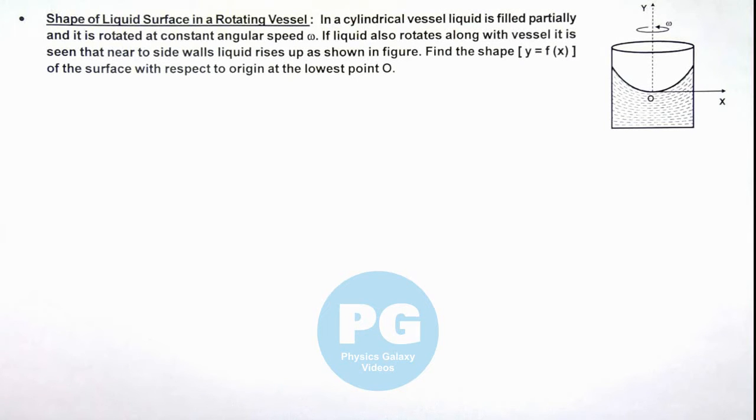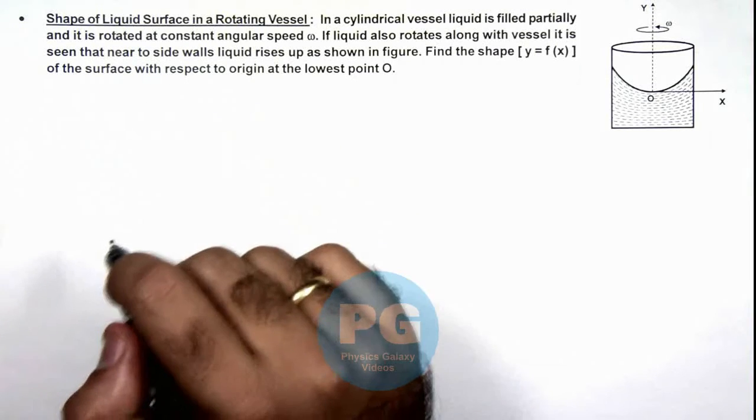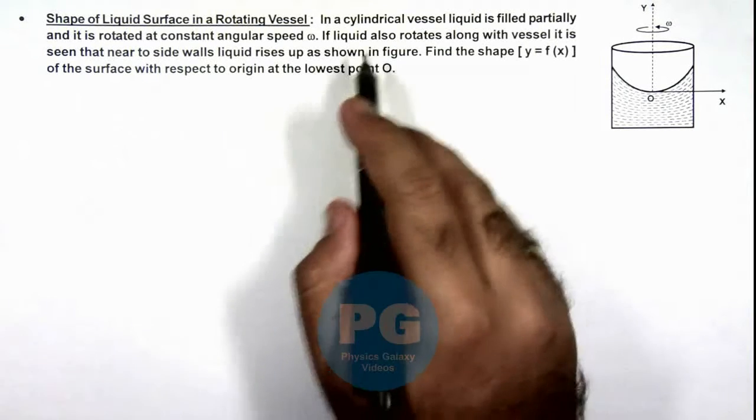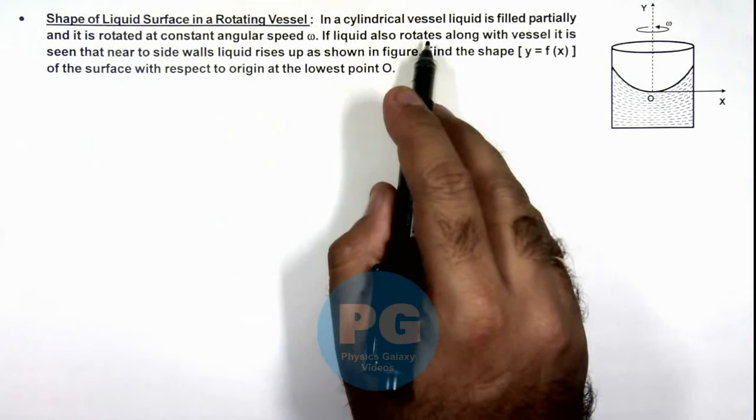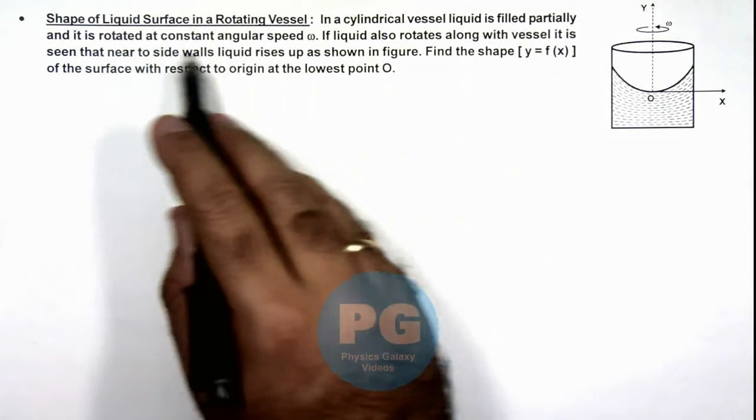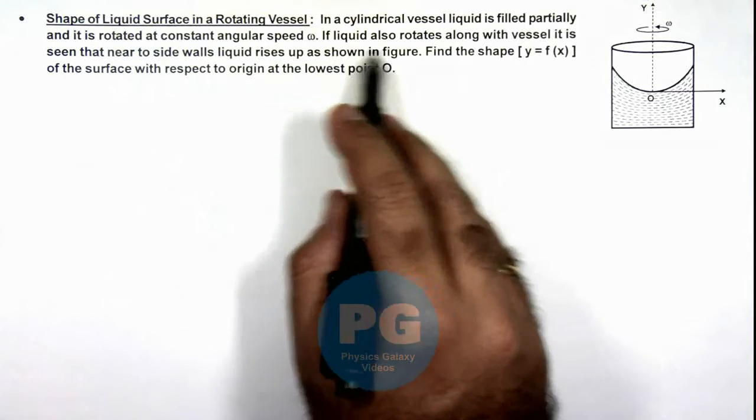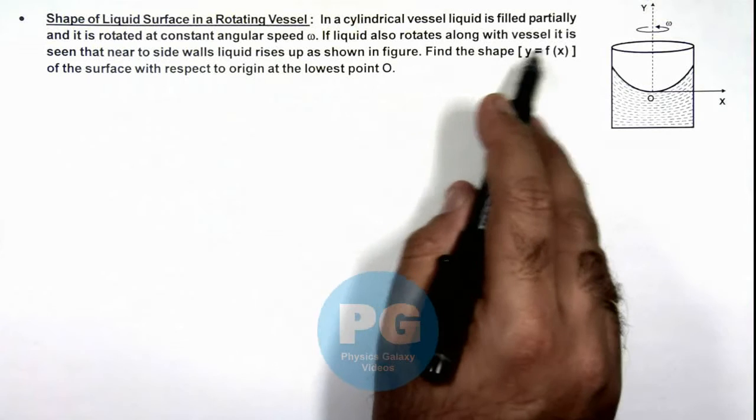In this illustration we'll analyze the shape of liquid surface in a rotating vessel. We are given that in a cylindrical vessel a liquid is filled partially and it is rotated at constant angular speed omega, and the liquid also rotates along with the vessel.